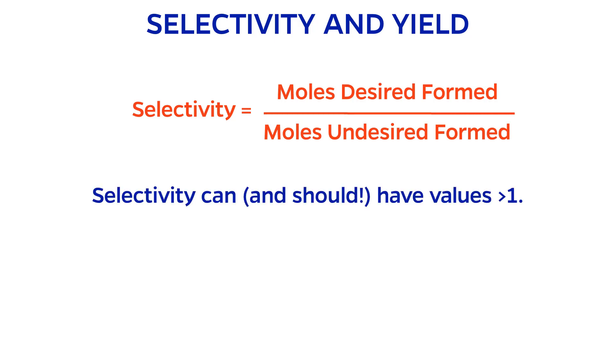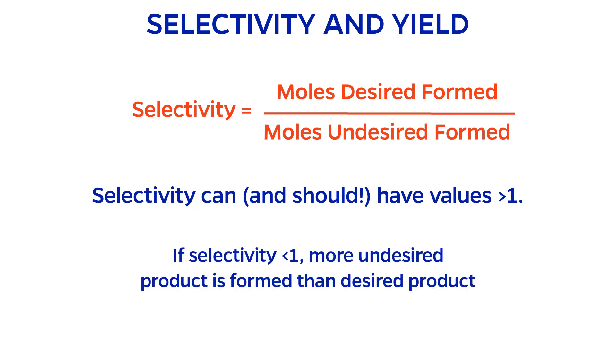Note that the value for selectivity defined this way can and should be greater than 1. If it were less than 1, it would mean that we are making more undesired product than desired, and our process is probably very inefficient.